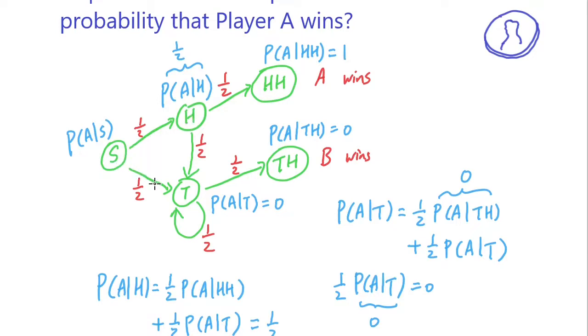We saw earlier that once you get a tail, there's no arrow climbing back. You're basically stuck in these lower states, and you either keep staying in state T or you're going to get into TH, in which case B is going to win.